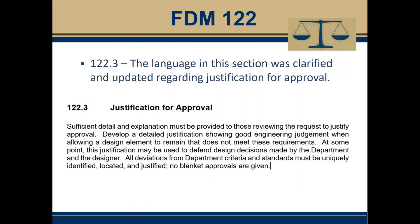Section 122.3 language was updated to clarify some of the justifications for approval. Some language in the previous version was not very clear regarding what kinds of justifications need to be included to defend design decisions made by the department and the designer. Each one of these must be uniquely identified, located, and justified. No blanket approvals are given, as every site and every road are different in their conditions and traffic.